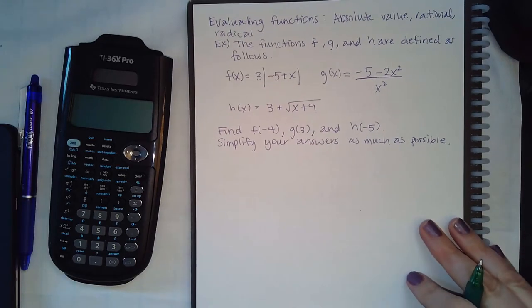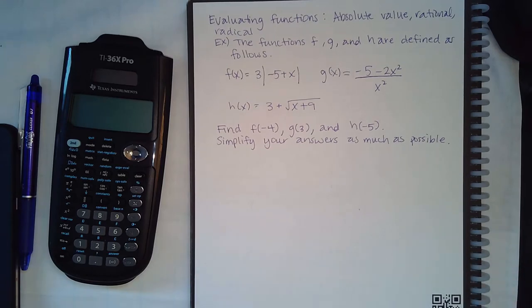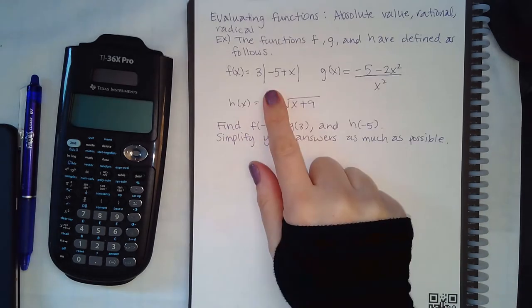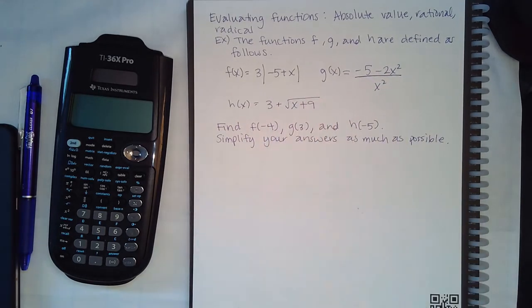Okay, this most likely will be the last video, only two parts for Module 23. We have evaluating functions: absolute value, rational, or radical. You've got three functions given. This is the function for F, the function for G, and the function for H, and they want you to evaluate each of these functions at a different x value.